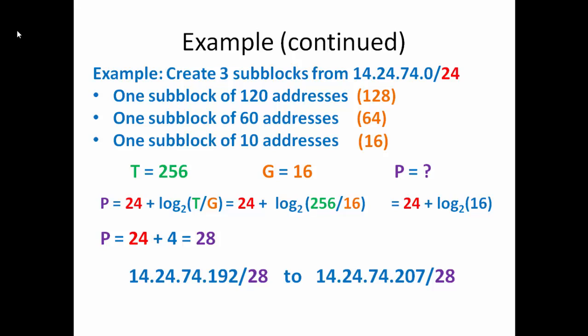So our last range of addresses then is 14.24.74.192, which is 1 up from the 191 ending that we had last time, /28 to 14.24.74.207/28, our last set of addresses.